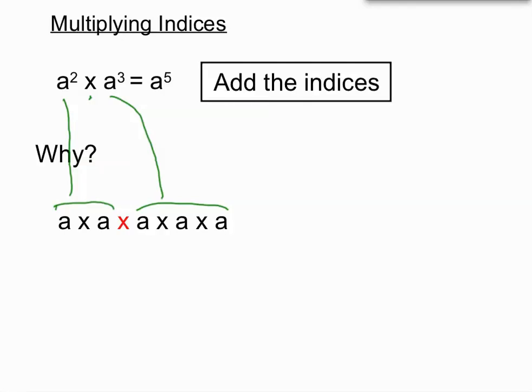And realize that the total number of a's multiplying together is 5. So that's how we get a to the 5. So expanding it, writing it in expanded form down here, really illustrates what's happening with the rule. So when we're multiplying indices, we add the indices.